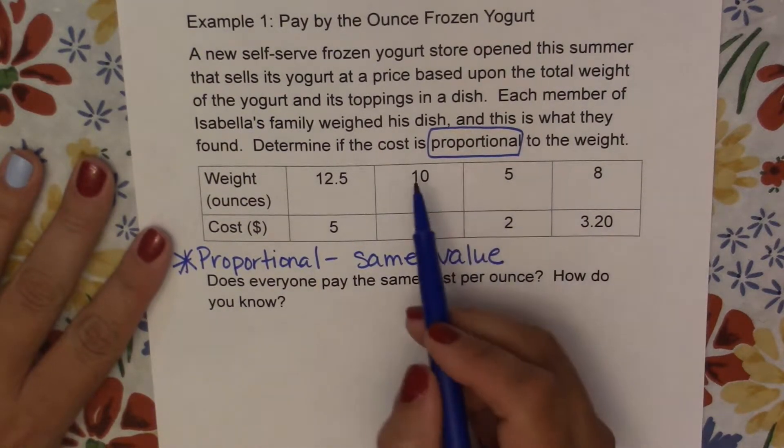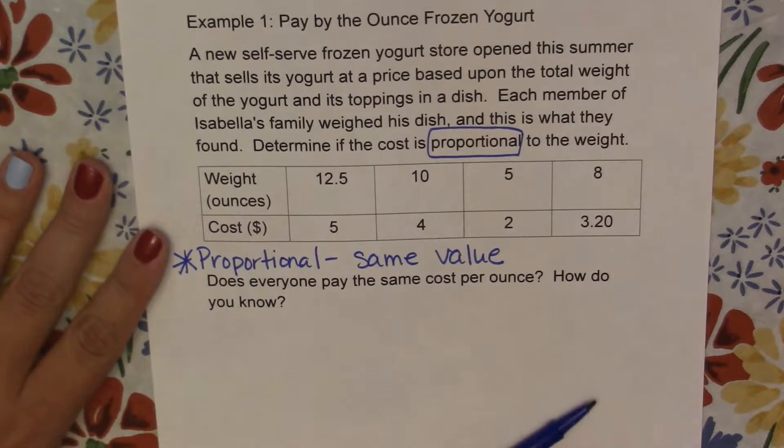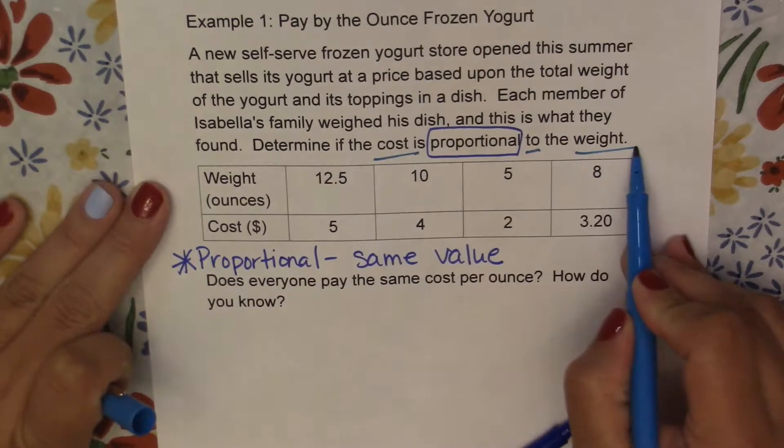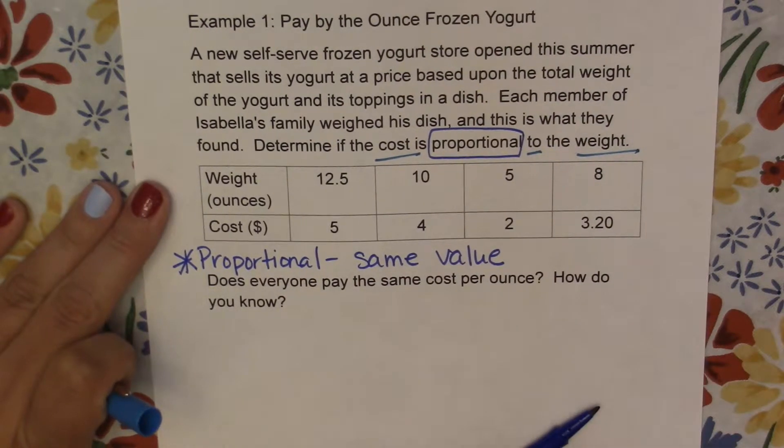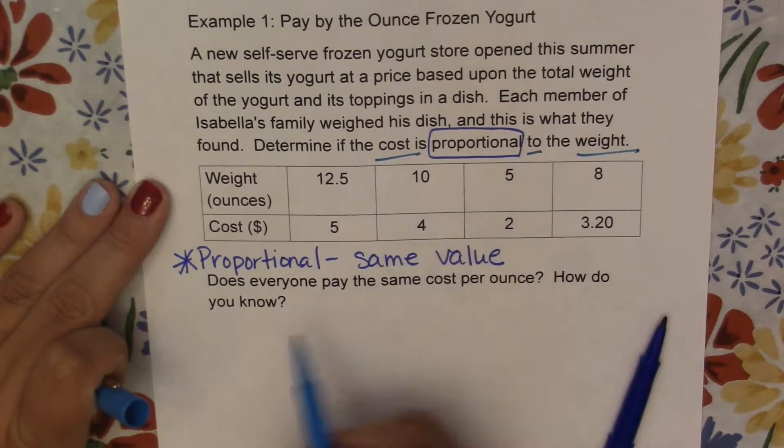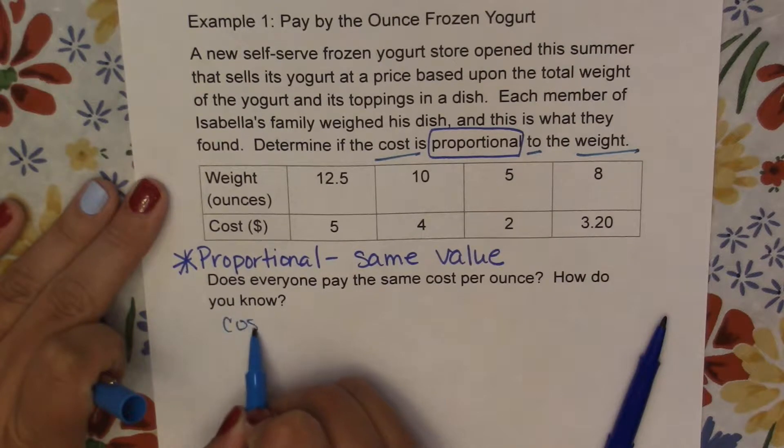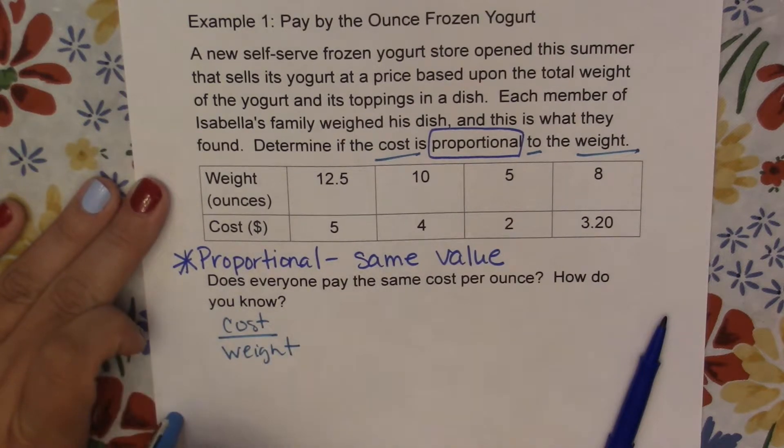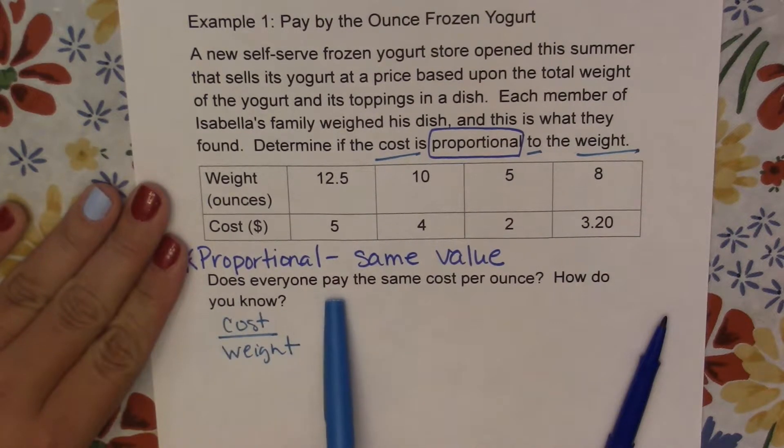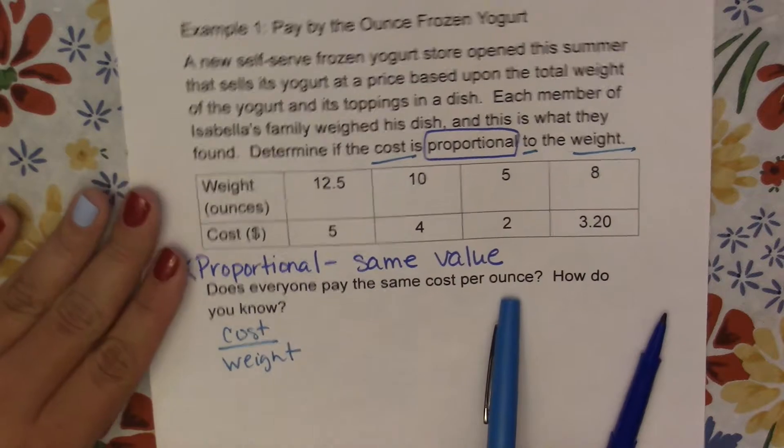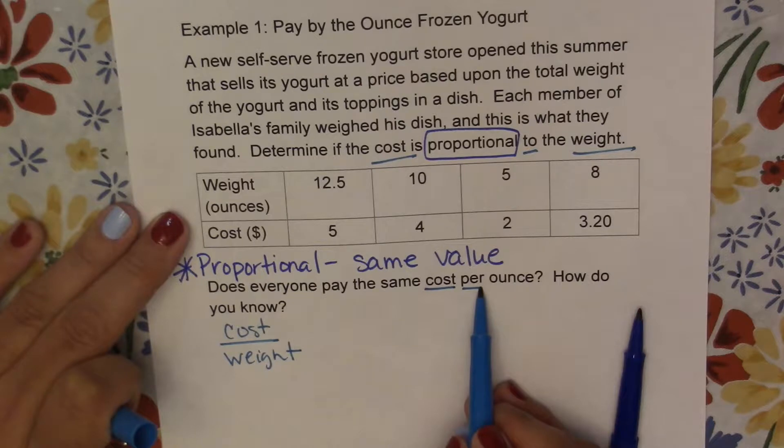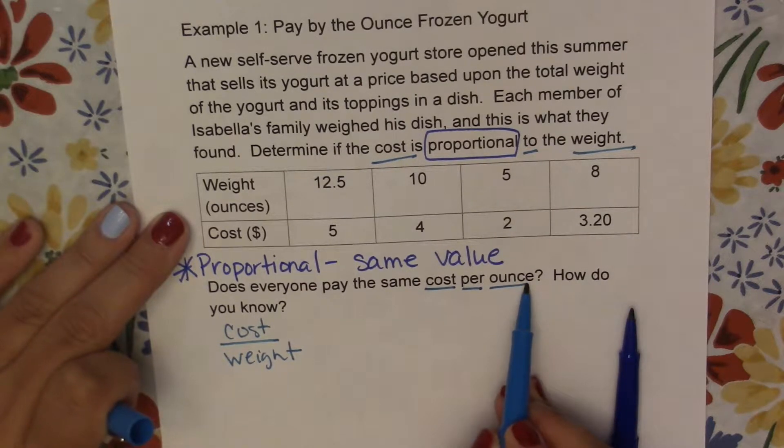So we are comparing our cost. Let me get a different color here. We are comparing our cost to the weight. So as I write this out, I'm going to write it exactly like that: cost to the weight. If we look at the question, it says does everyone pay the same cost per ounce? How do you know? So again, that's our cost per, or to, the ounce or the weight.